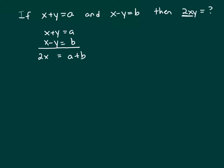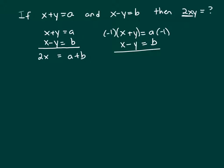In this first part, I was trying to get rid of my y's. Now in this second part, I'm going to get rid of my x's so I can solve for y. If I add these two equations together, my x's are not eliminated. So I'm going to multiply the top equation, both sides, by negative 1. If I do that, I get negative x minus y equals negative a.